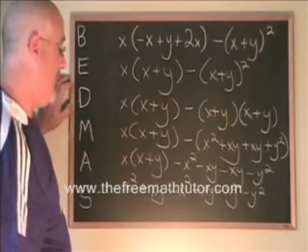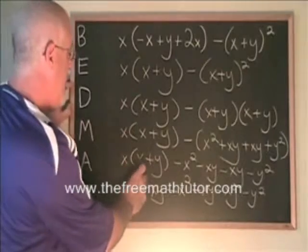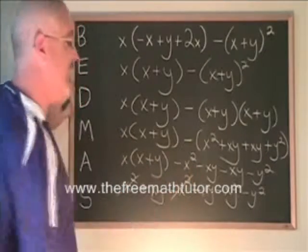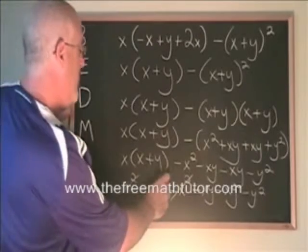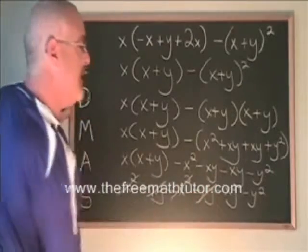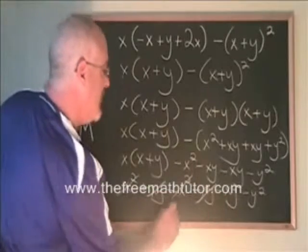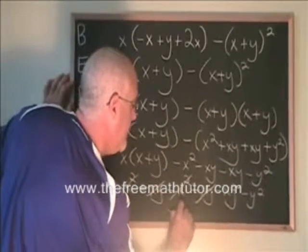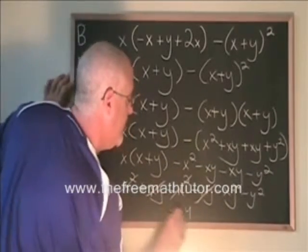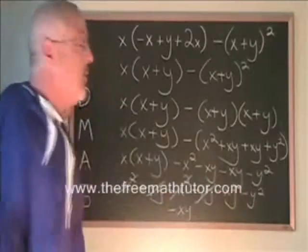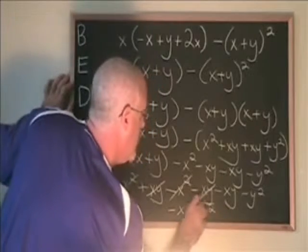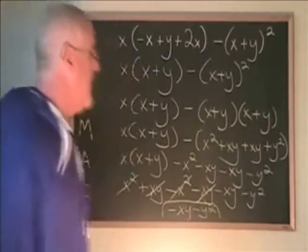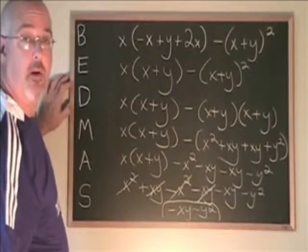It's time to combine similar terms. We have x squared minus x squared, which cancel. There are no x squared terms in the answer. We have xy minus xy, which cancel. And there's still a negative xy in the answer. And minus y squared is the only y squared term, so we write it in. Our answer is negative xy minus y squared.